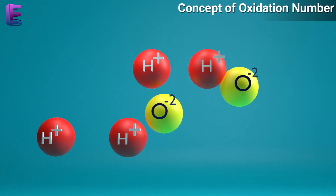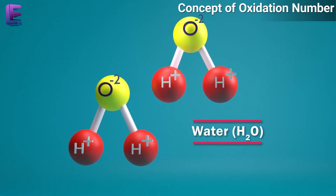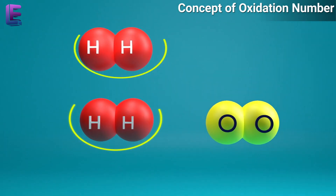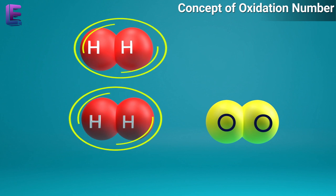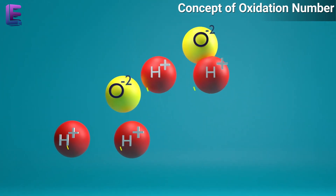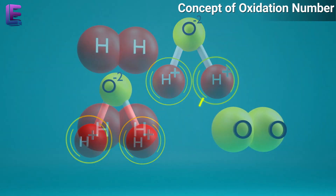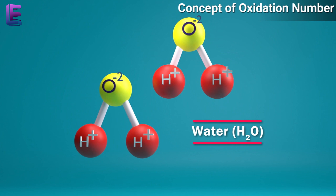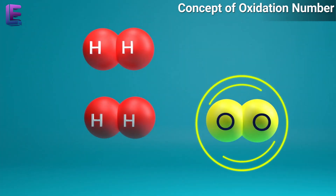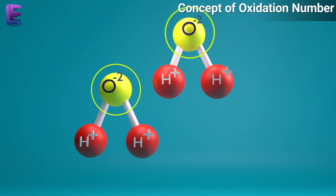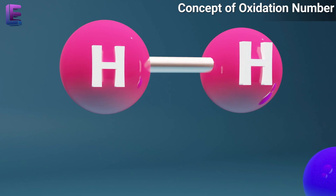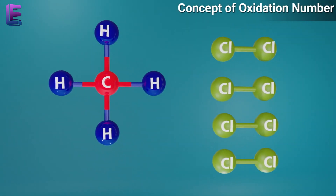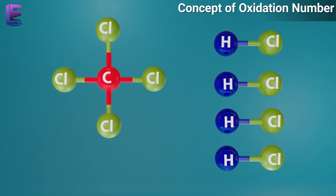Concept of oxidation number: Oxygen and hydrogen react to form water, though the electron exchange is not very clear. In 2H2 + O2 → 2H2O, the H atom goes from a neutral state in H2 to a positive state in H2O, while oxygen goes from zero in O2 to a di-negative state in H2O. It is assumed there is an electron transfer, so H2 is oxidized and O2 is reduced. Other examples: H2O + Cl2 → 2HCl, and CH4 + 4Cl2 → CCl4 + 4HCl.